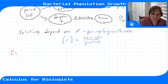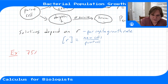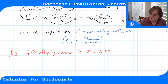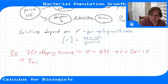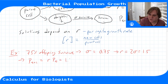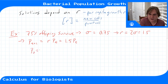Let's do an example. Say it's not a very nice petri dish, so 75 percent of the offspring survive. In this case sigma equals 0.75, which gives us r = 2σ = 1.5. So not quite doubling each hour, but still growing. Our model becomes p(t+1) = 1.5·p(t).